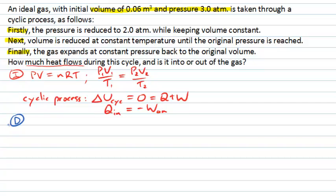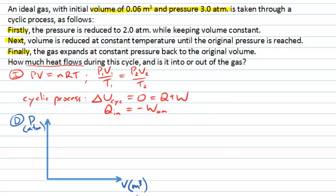It's very often useful to have a diagram, and for this kind of problem a pressure versus volume graph is very helpful. We'll have pressure on the vertical axis in atmospheres and volume on the horizontal axis in cubic metres. Before drawing, it's useful to think about a good starting point. The first step reduces pressure — moving vertically downward; next we reduce volume — moving left; then we return to original volume — moving right. So starting in a location like this and labeling it state A is useful.